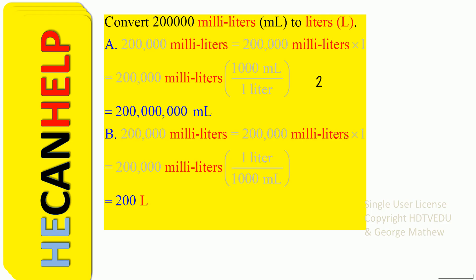So we are going to convert 200,000 milliliters to liters. We multiply by one and then what do we do? Replace one in such a way we have ML at the bottom. Whatever we do, we have to have ML at the bottom.